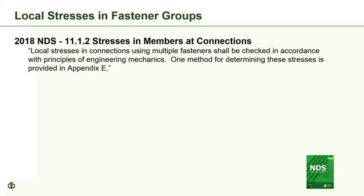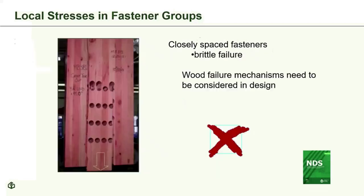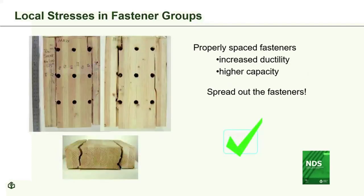One final note on fasteners: Appendix E was added to the NDS to check fastener groups for failures. Testing showed that where a fastener group has closely spaced fasteners loaded parallel to grain, the group capacity may be limited by wood failure at the net section or tear-out around fasteners caused by local stresses. By increasing spacing between fasteners, much higher capacity and ductility is achieved, even with fewer fasteners. So again — spread out those fasteners parallel to the grain.